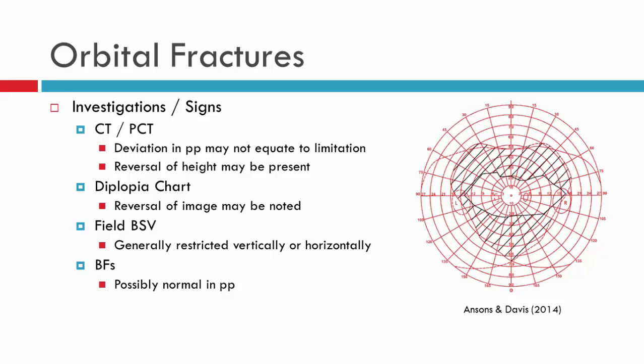The field of BSV generally does not occur in tertiary positions such as levo-depression. Looking at the field of BSV here, we can see restriction vertically — restriction of both elevation and depression — resulting in a central area of BSV within primary position, again not characteristic of a neurogenic palsy. This patient, despite having a blowout fracture, may actually have binocular single vision in primary position if their eyes are aligned there.